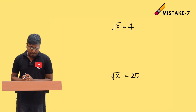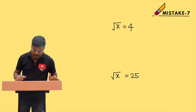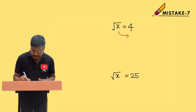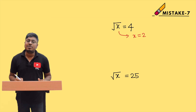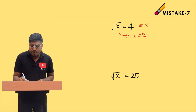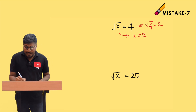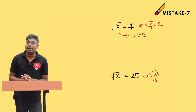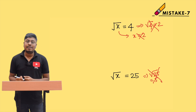Many beginners make a mistake in this area. When asked to find x given that the square root of x equals 4, most students say x equals 2. That is wrong. Students mistakenly think they need to find the square root of 4. Similarly, for square root of x equals 25, beginners think they just find the square root of 25 and say x equals 5. That is also wrong.